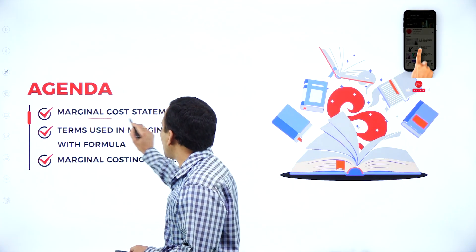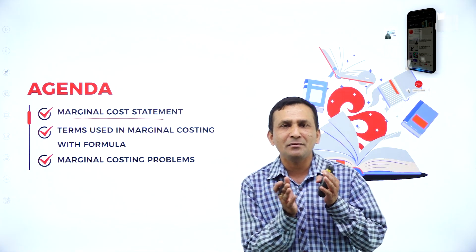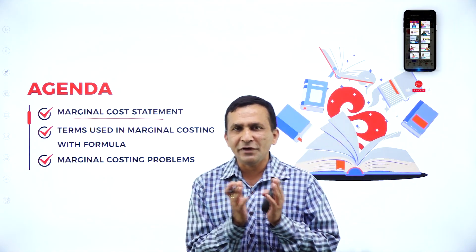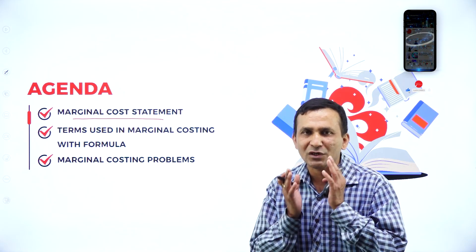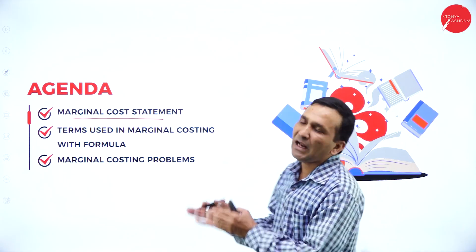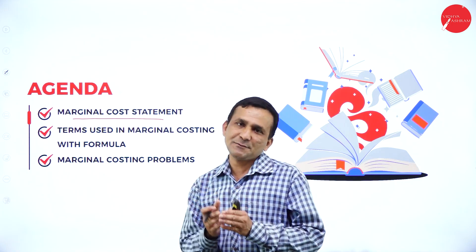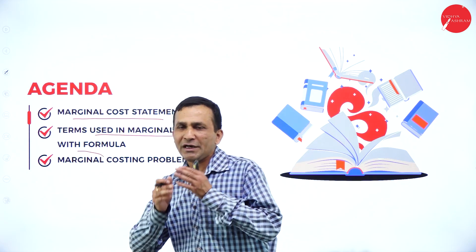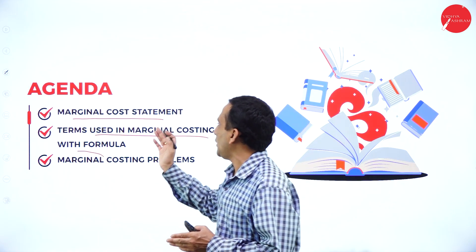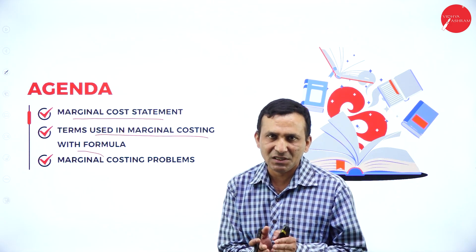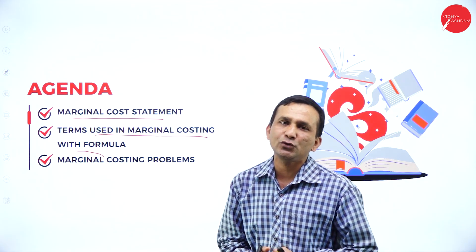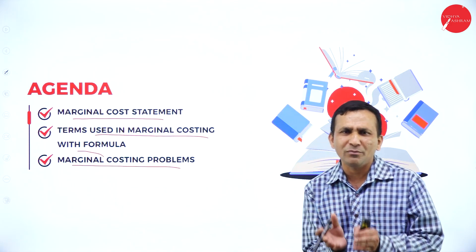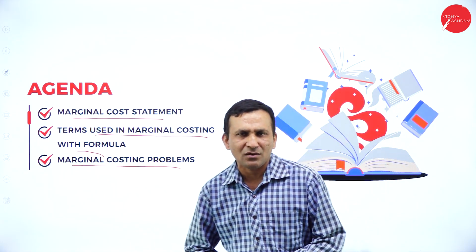The agenda is: under marginal costing, you will get a marginal costing statement — how to prepare it using sales, variable cost, fixed cost, and what all is required for the formula. So with the help of the statement only, we are working through the terms used in marginal costing with the formulas, and how to apply them to marginal costing problems.